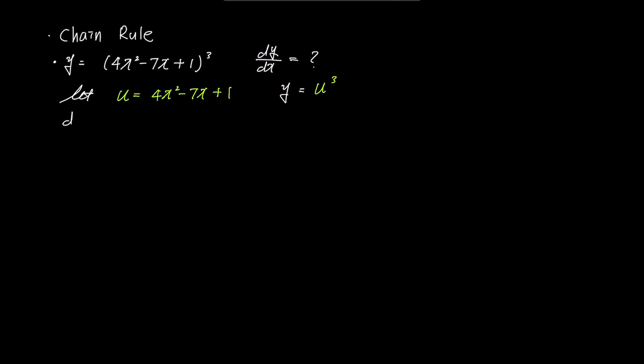The result we want to find is dy/dx, but u has appeared, so we need to change the expression of dy/dx to include u. This is where the chain rule comes in, and dy/dx now becomes dy/du times du/dx. To find dy/dx, we need to calculate dy/du inside the yellow box and du/dx inside the green box, and then multiply them.